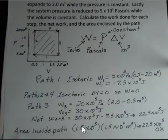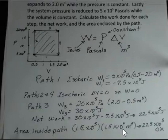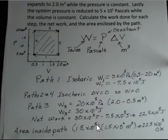So 15 times 10 to the fifth, that's our height here, the height of this rectangle, and then 1.5, we're going from 0.5 to 2, so it's 1.5 units wide in cubic meters. This one's pascals. We multiply those together, and it's not surprising we get the same number.